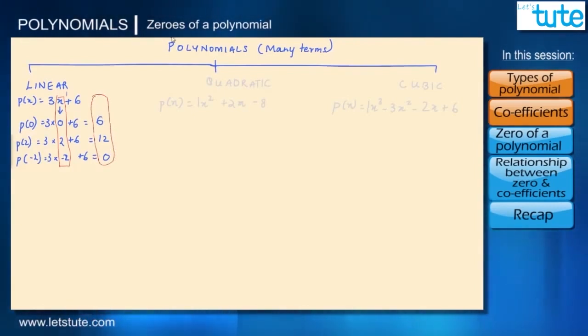This means the polynomial depends on the variable x here. So when the polynomial is equal to 0, the value of x at that point that is minus 2 is mathematically called zero of a polynomial or root of a polynomial.